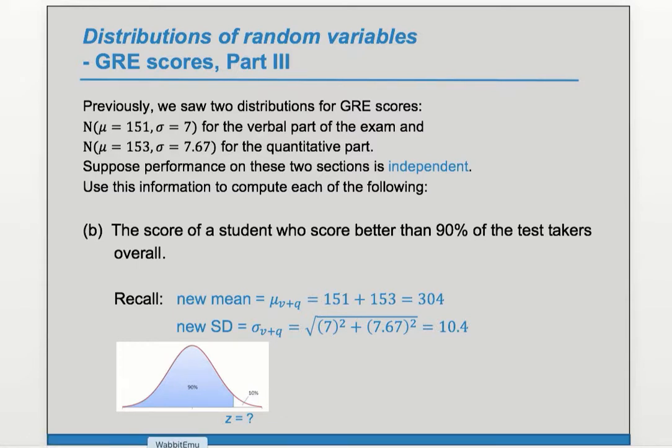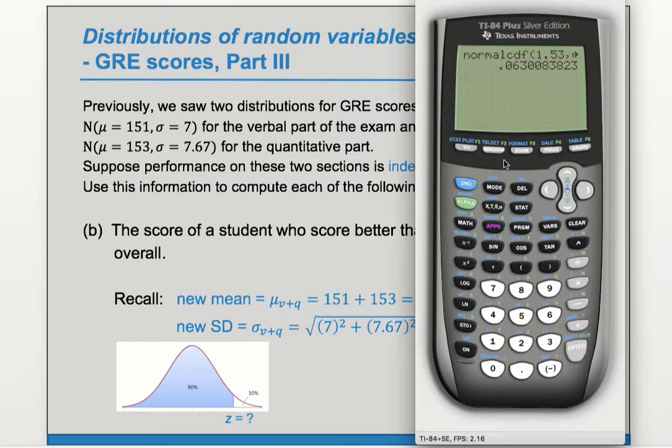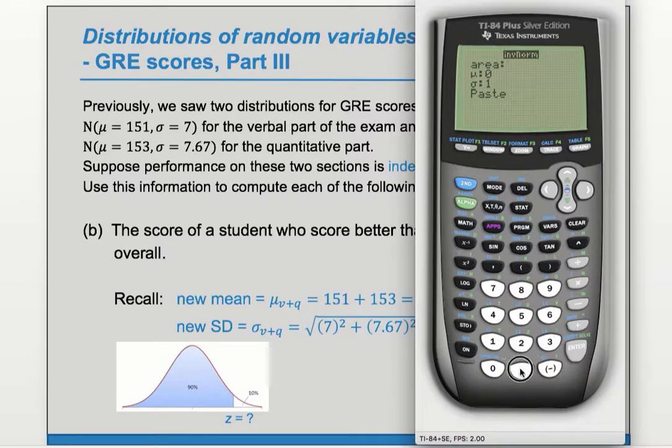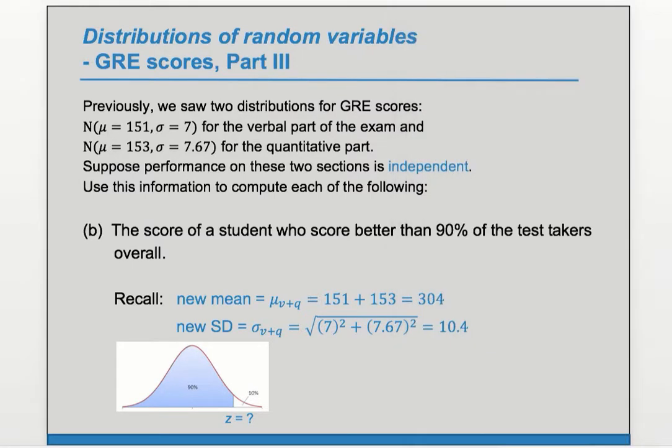To do that, we can again grab a calculator. And this time we have a percent, 90th percentile, and we want the corresponding z score. So we're going to do the inverse problem and choose inverse norm. And we want the 90th percentile, so we enter that as a decimal. And that's going to give us a z score of 1.28.